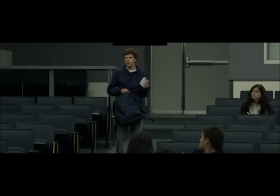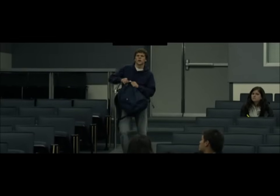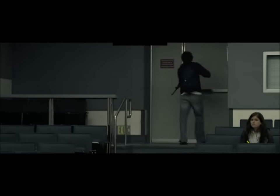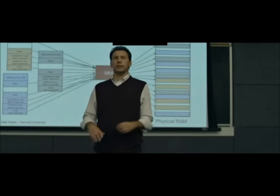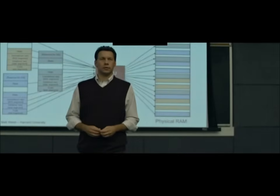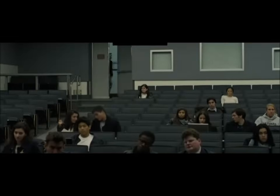One valid bit, one modified bit, one reference bit, five permission bits. That is correct. Does everybody see how he got there?